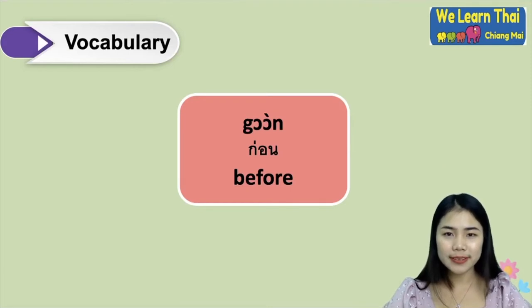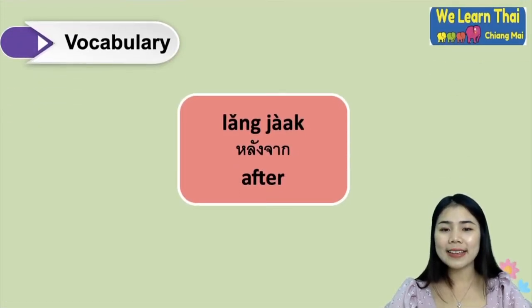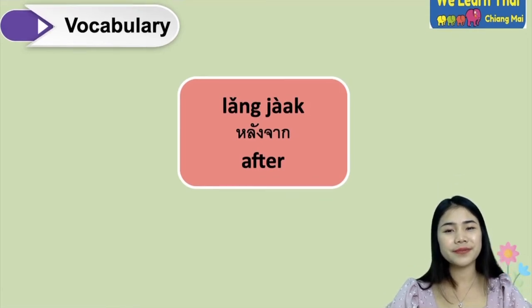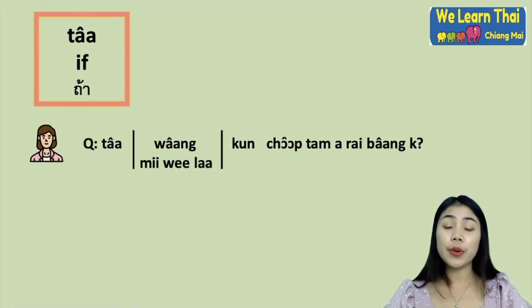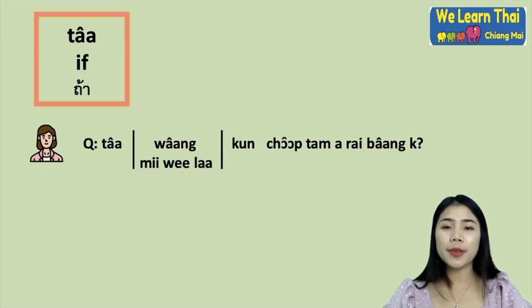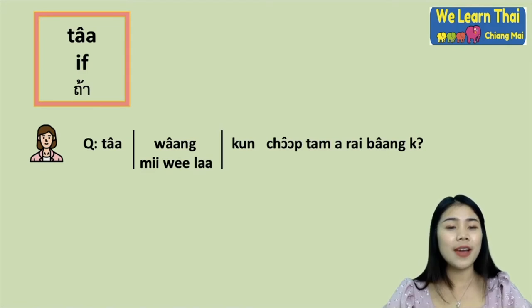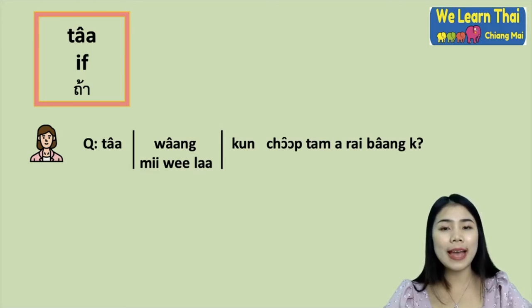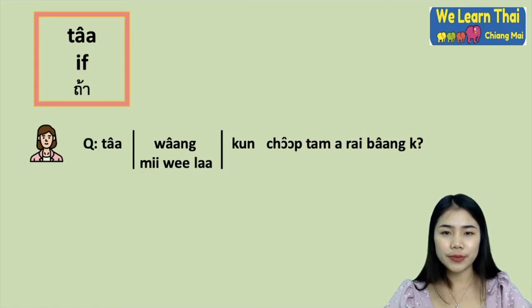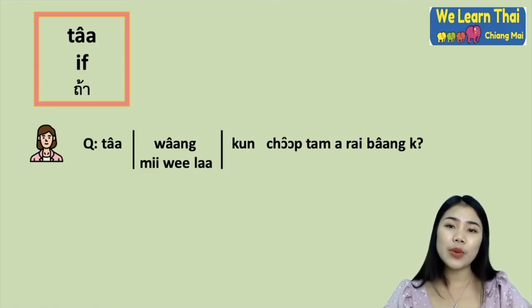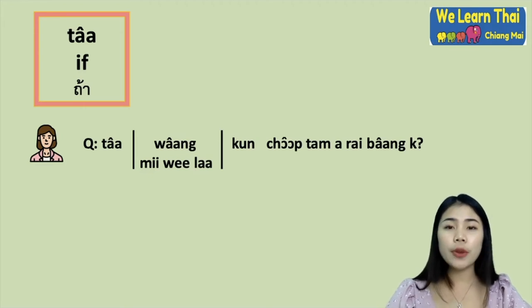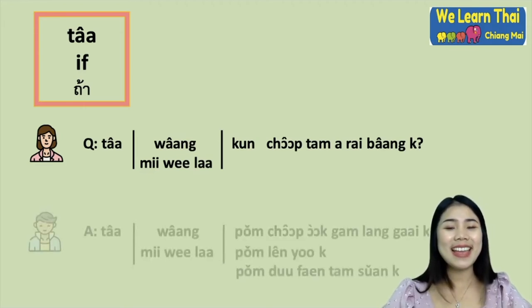'Gòon' means before, or you can say 'lang jàak' which means after. For the simple pattern using the word 'thaa', for a question you say: 'Thaa wâang koon chôb tham arai bâang ká' — if you are free, what do you like to do? Or you say 'Thaa mii we-laa koon chôb tham arai bâang ká' — if you have time, what do you like to do? You can use 'wâang' or 'mii we-laa'; they have the same meaning.